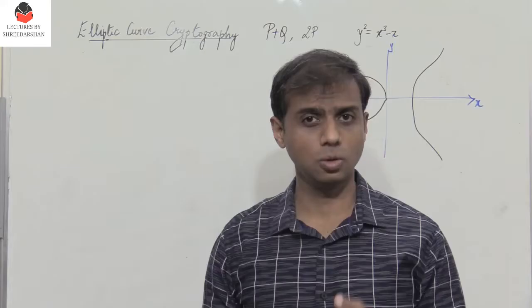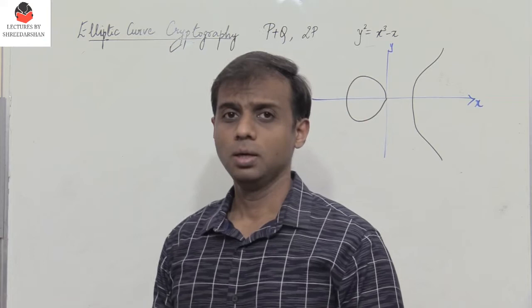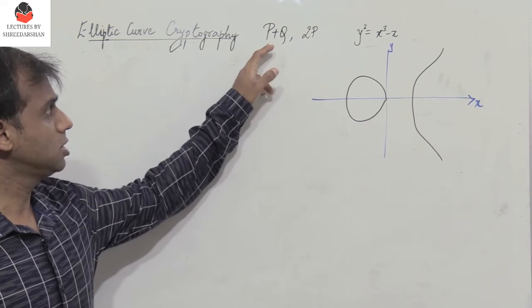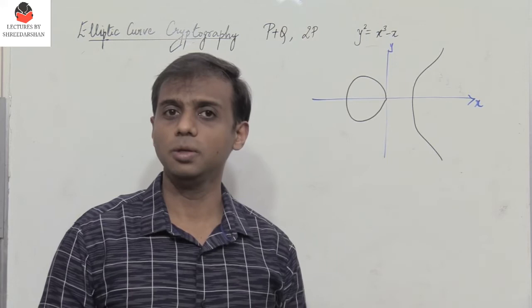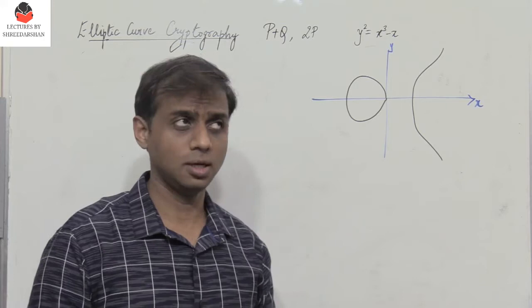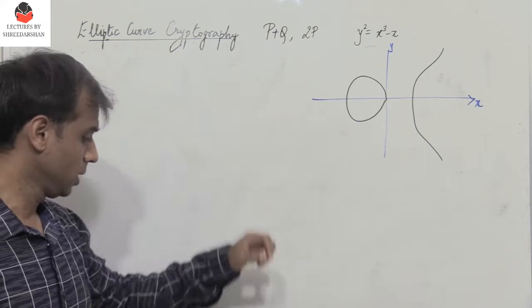Welcome to the third video session on elliptic curve cryptography. In this session we shall discuss how we can find the points P plus Q and 2P on the elliptic curve. In the first video segment we saw how to find all the points of the elliptic curve in a given modulus p. In the second video segment we described and discussed the process of encryption and decryption.